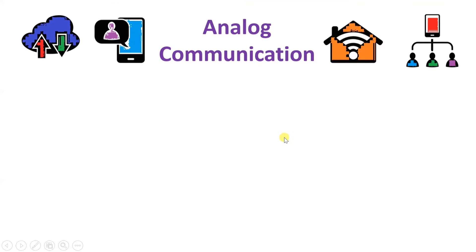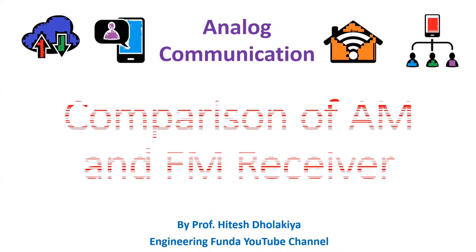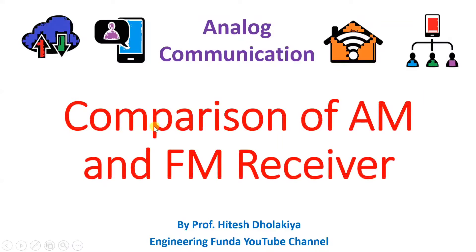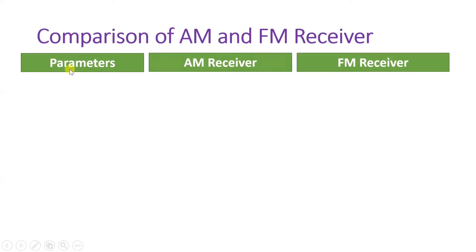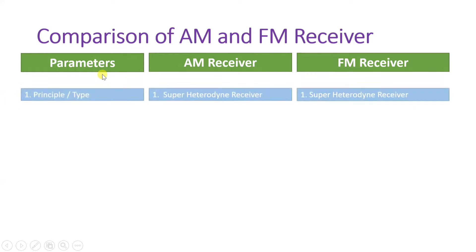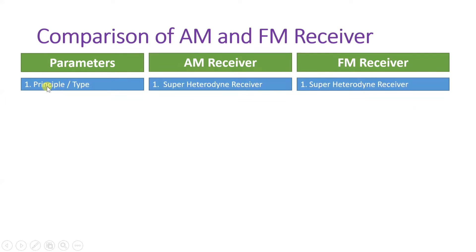Welcome to the analog communication playlist. Professor Itesh Dulakia is going to explain a comparison of AM and FM receivers in this session. We are dealing with comparing AM receiver and FM receiver based on different parameters. Let us begin with the first parameter: the principle on which AM and FM receivers function.